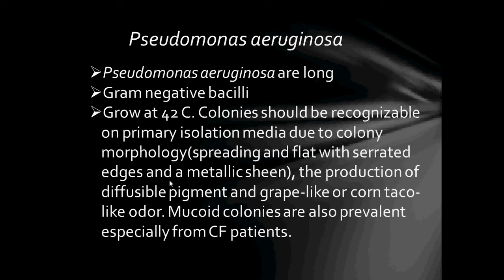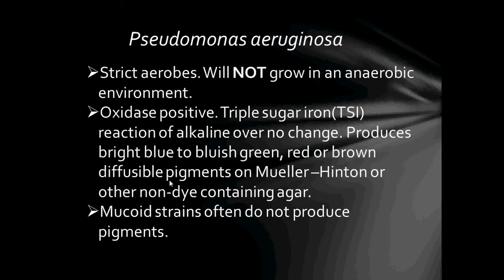Pseudomonas aeruginosa also produces diffusible pigment and a grape-like or corn tortilla-like odour. Mucoid colonies are also prevalent, especially from cystic fibrosis patients. They are strict aerobes and will not grow in an anaerobic environment. They are oxidase positive, and triple sugar iron (TSI) reaction usually shows no change because they produce an alkaline by-product — the phenol red pH-sensitive dye in TSI would turn yellow if fermentation produced acidic by-products, but no colour change occurs here.